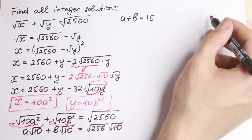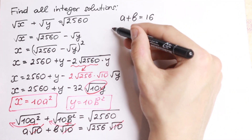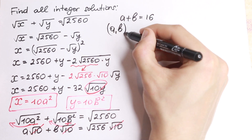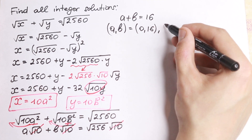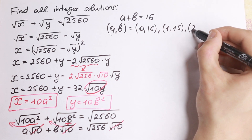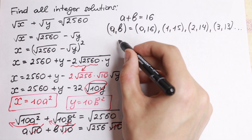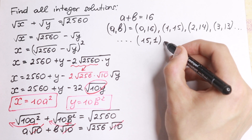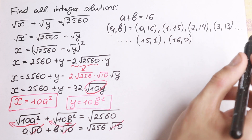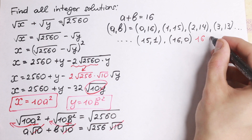After all these simplifying steps we have a plus b equal to 16. This gives a large number of non-negative integer pairs. For example: (0, 16), (1, 15), (2, 14), (3, 13), and so on — there are 16 such solution pairs in total.